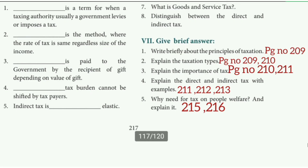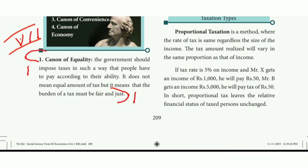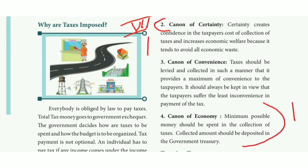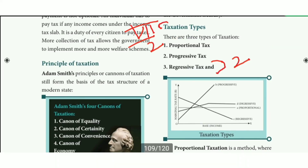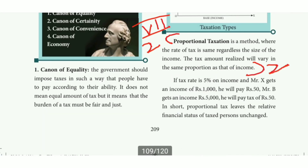Long answer. First: write in detail about the principles of taxation. Refer to page number 209 — canon of equality, first paragraph. Then on the other page, right side: canon of certainty, canon of convenience, canon of economy — three headings, three paragraphs each. Page 209–210. There are three types — refer to the picture key, first type heading, first paragraph. Proportional tax, first paragraph.